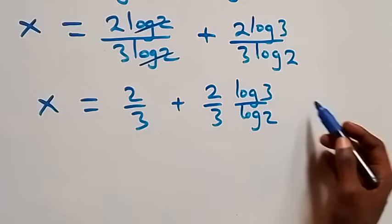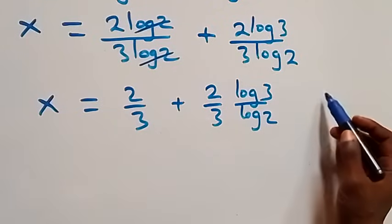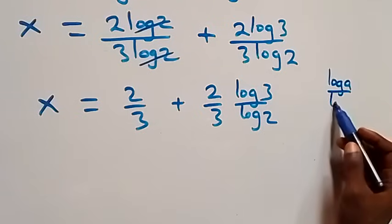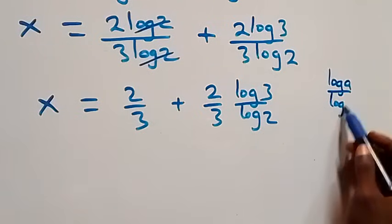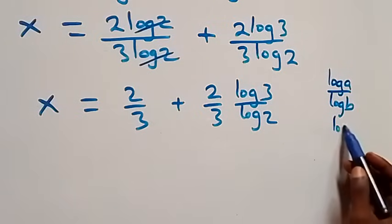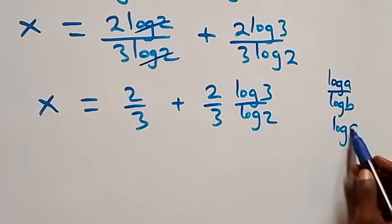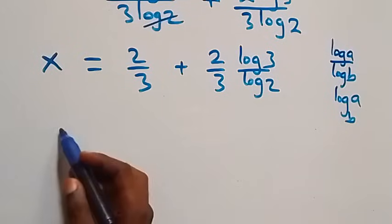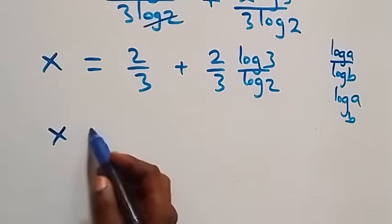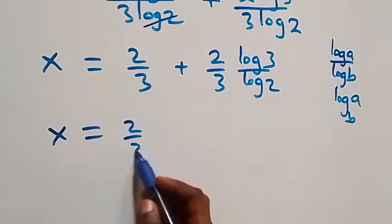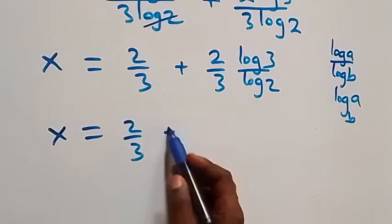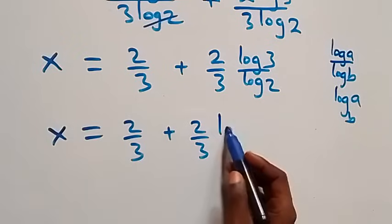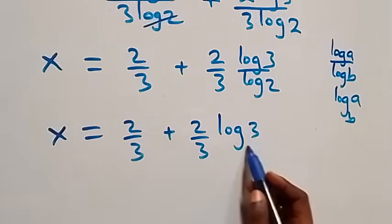Using the change of base rule, log a over log b is the same as log a to base b. So x equals 2 over 3 plus 2 over 3 times log 3 base 2.